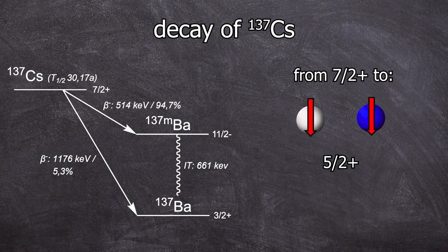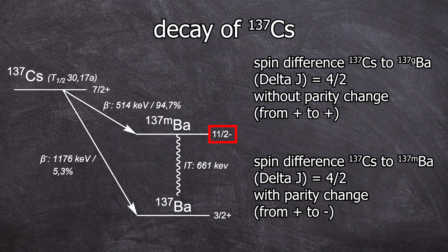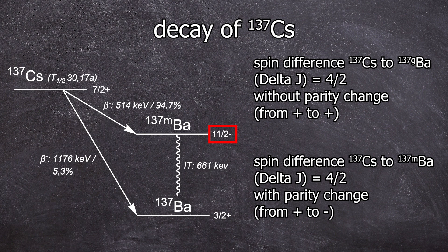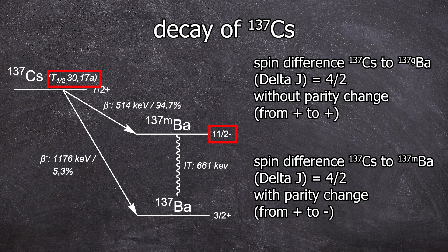Does the barium-137M state have one of these spins? No, it has a spin of 11/2 minus, so it's also 4/2 away from cesium, but with a parity change from plus to minus. This inaccessibility of the state explains why cesium-137 has such a long half-life. The transition is described by quantum mechanics, and if something is forbidden, it's still possible, but just takes much longer.